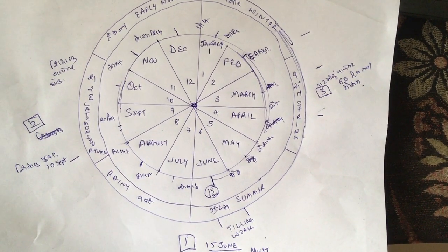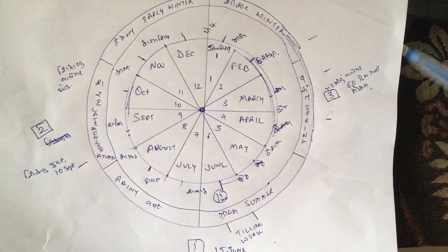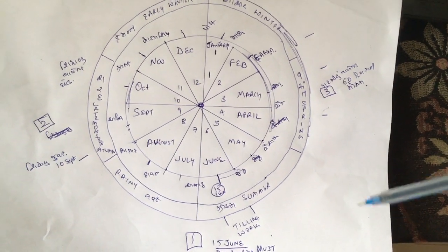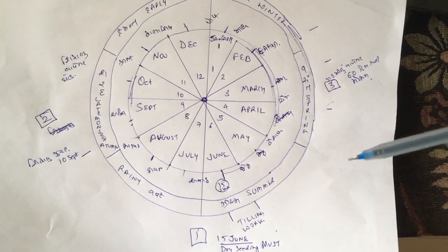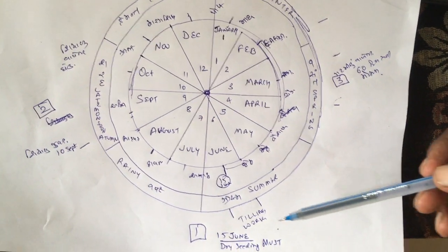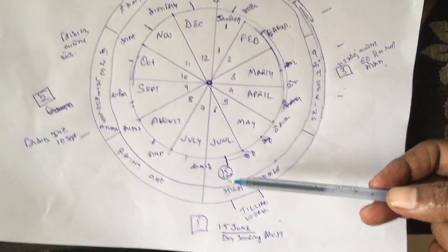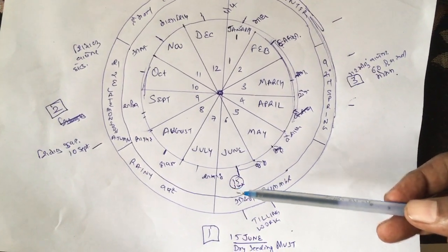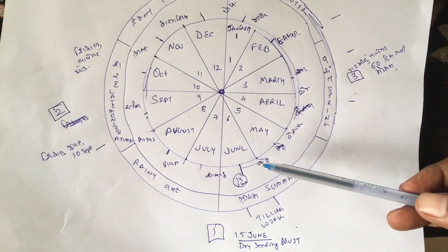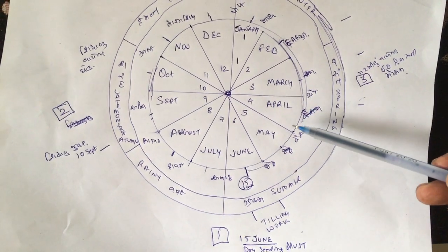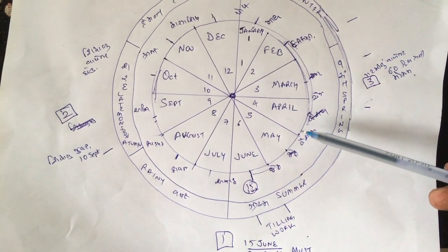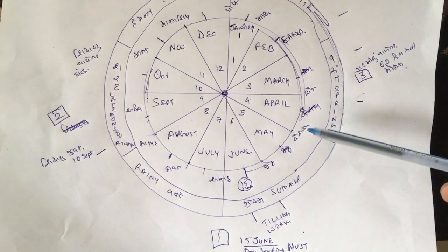This is the farming map in India. We have three seasons, first starting with the rainy season. 15 June is the last date for sowing. Before that, in April and May, you have to prepare your land.